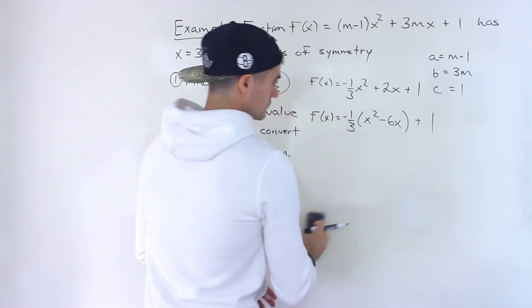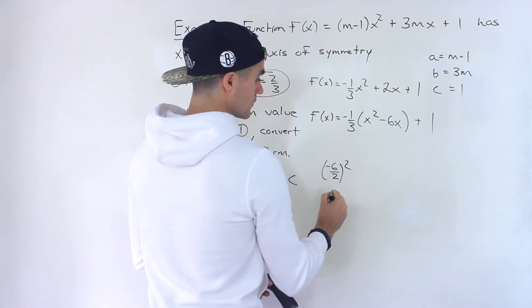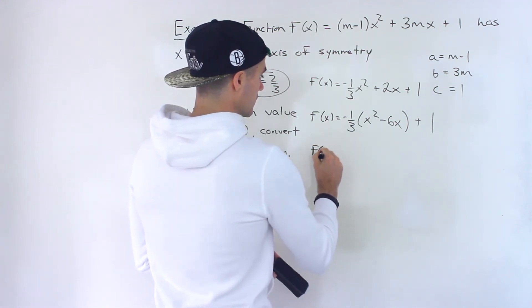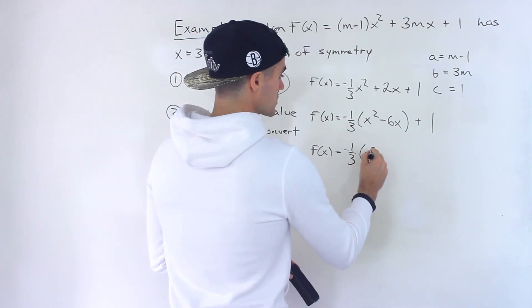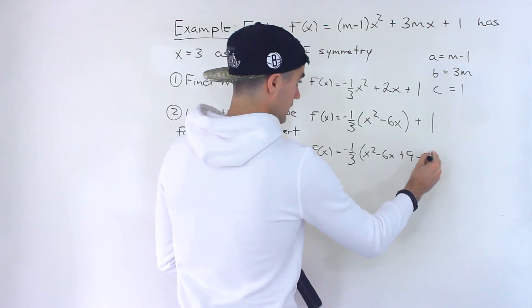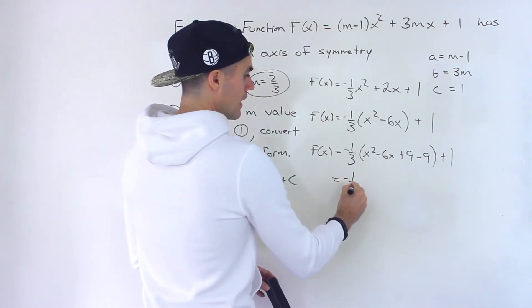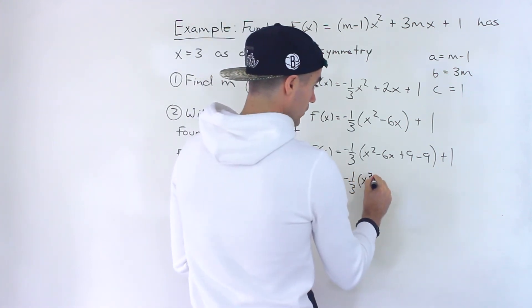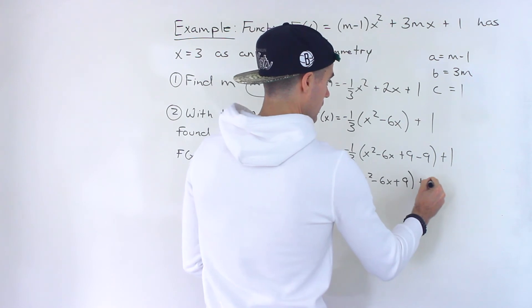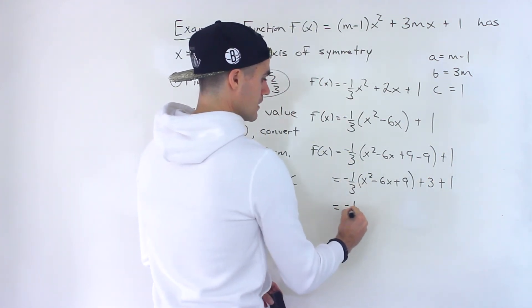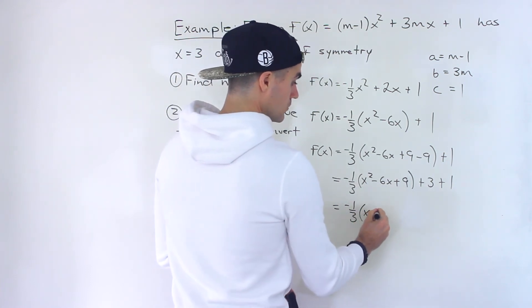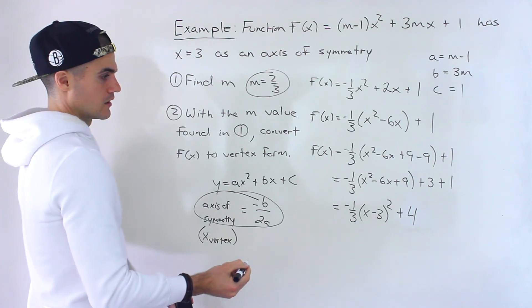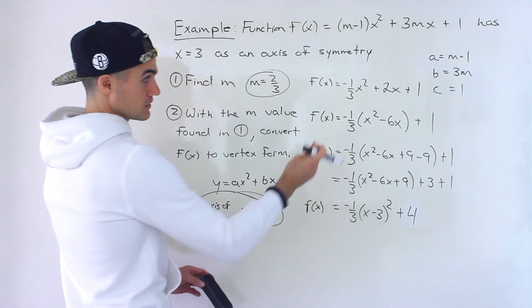And then the plus 1 stays outside of the bracket. And then what we do is we take this negative 6 divided by 2 and square it, which would give us 9, right? Negative 3 to the power of 2 is 9. And so that 9, what would happen is we'd end up having x² minus 6x plus 9 minus 9 plus 1. Then we want to take that negative 9 out. But when we take it out, we've got to multiply by what's in front. So negative 9 times negative 1 over 3 would give us positive 3. Like that. And then notice that this here, perfect square trinomial, factors into (x-3)² and then 3 plus 1 gives us 4. Right?